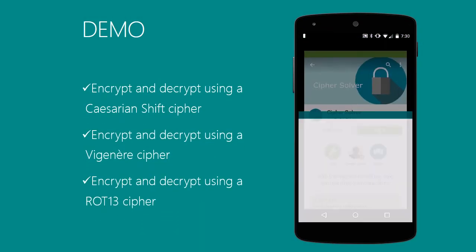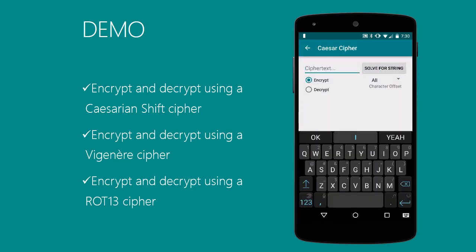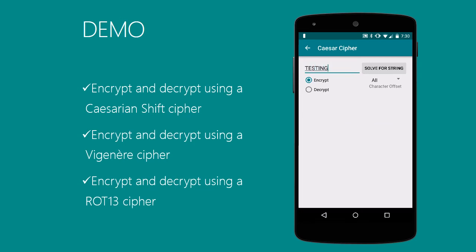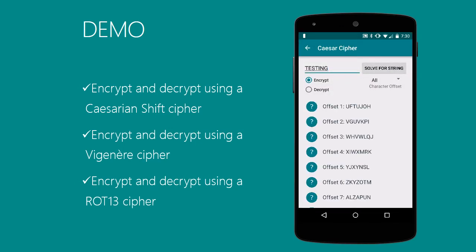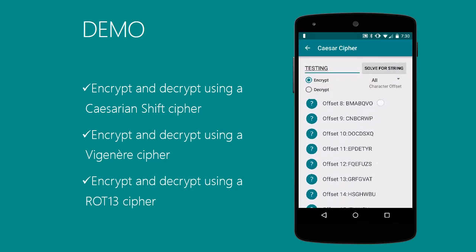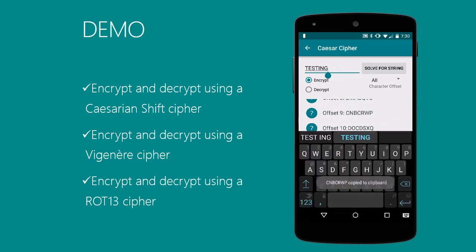Here's a quick demo of the application. We're going to encrypt and decrypt using a Caesar cipher. I'll put in the word 'testing' and encrypt it using all the different offsets, and you can see that it spits them all out.